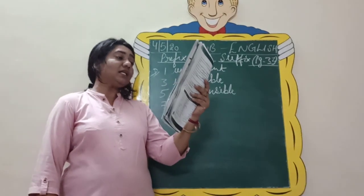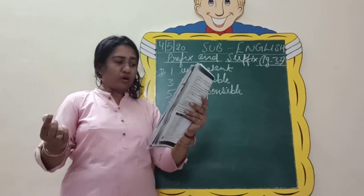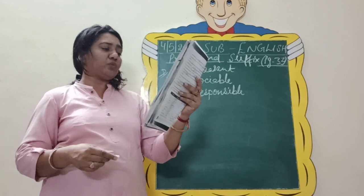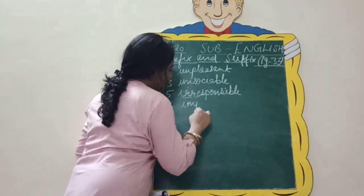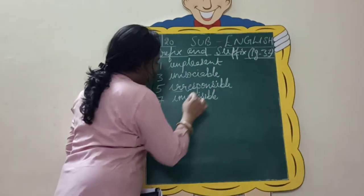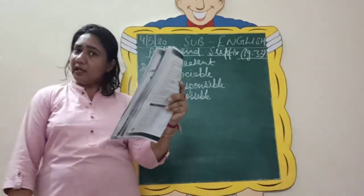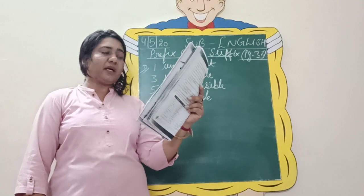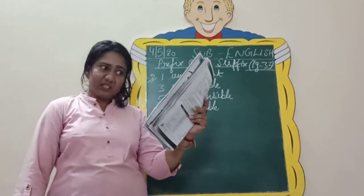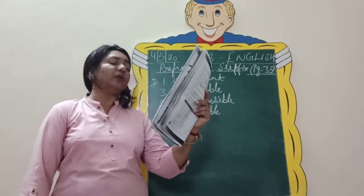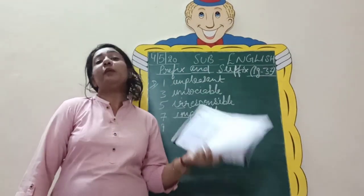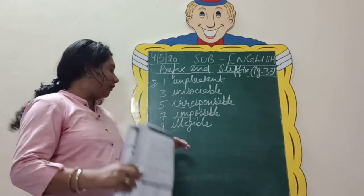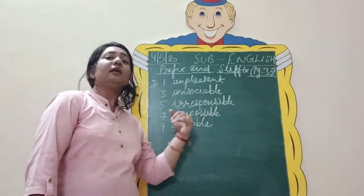Number 7: 'This riddle is dash to solve.' The word 'possible' is already given, so we add the prefix 'im-' to make it 'impossible to solve.' This is how you look at the sense of the sentence and decide whether to add a prefix or suffix accordingly.